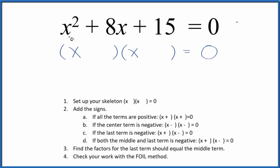If you're asked to factor the equation x squared plus 8x plus 15 equals 0, here's how you do it. First off, you set up a skeleton equation like this right here.